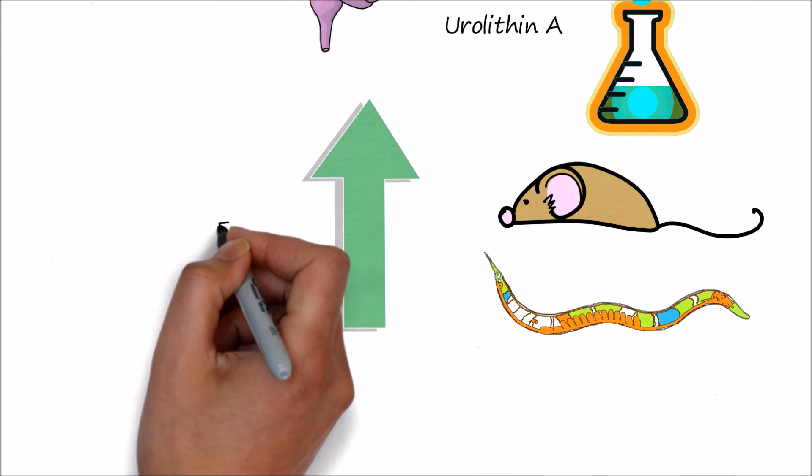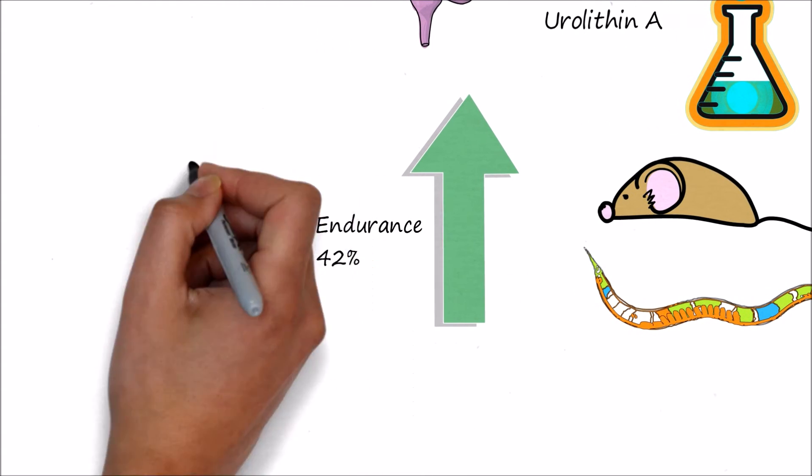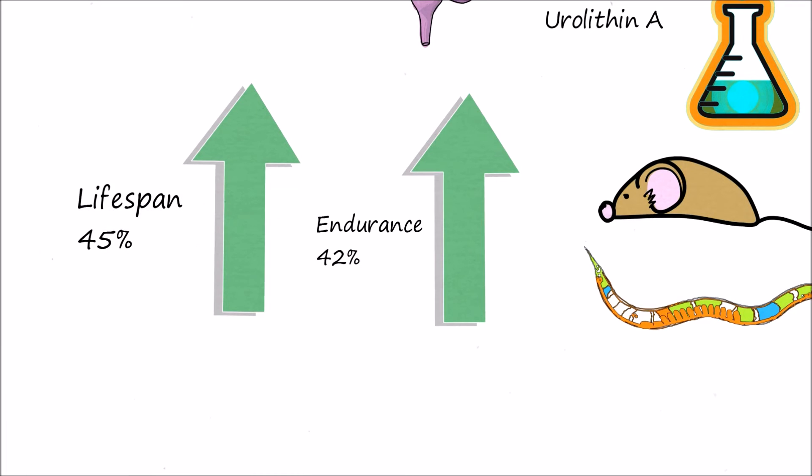Compared to the normal counterparts, the urolithin A fed animals had 42% increased endurance and 45% increased lifespan.